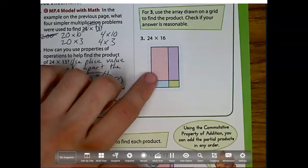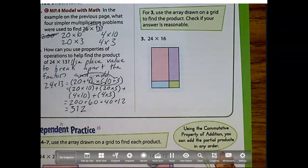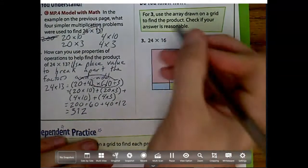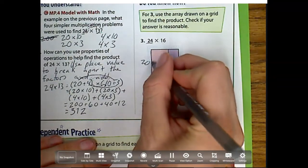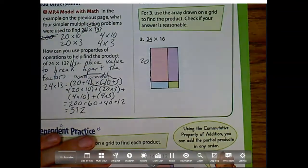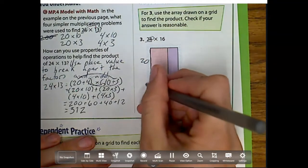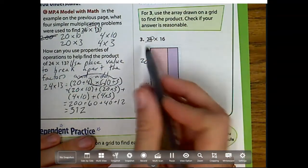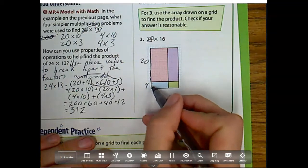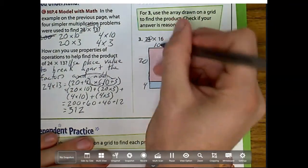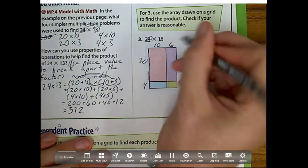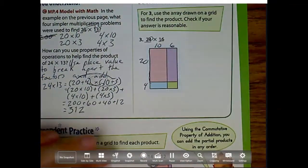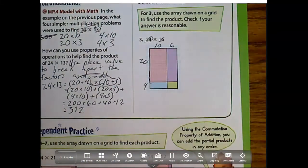So let's look. For number 3, use the array drawn on a grid to find the product. Check if your answer is reasonable. Well, here, notice I have 24. So there's 20 blocks right here, this red part, there's 20 blocks, and this 4 is right down here. Notice how 20 plus 4 equals 24, and there's 4 blocks right there. So that means this top part, this pink one, it's 10 across, and the 10 here, and 6 across right here.